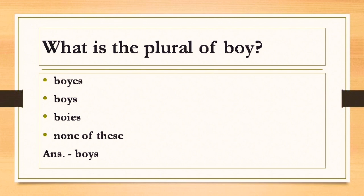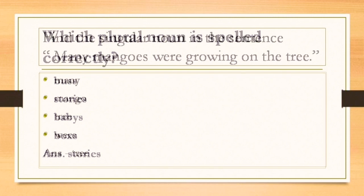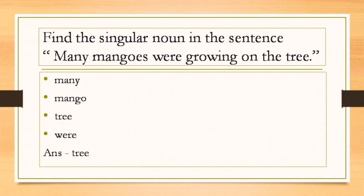Which plural noun is spelled correctly? Now you have to see which plural noun is spelled correctly. Option A: B-U-S-S. Option B: S-T-O-R-I-E-S. Option C: B-A-B-Y-S. Option D: Boxes, B-O-X-S. So we can see option number B is correctly spelled, S-T-O-R-I-E-S.